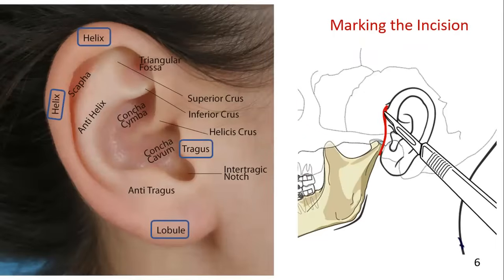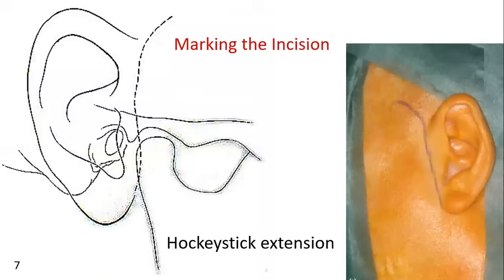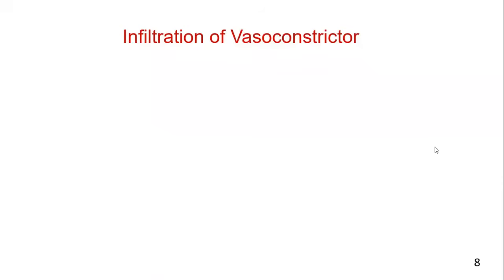The incision is outlined at the junction of the facial skin with the helix of the ear. A natural skin fold along the entire length of the junction can be marked. If none is present, posterior digital pressure on the pre-auricular skin usually creates a skin fold that can be marked. The incision extends superiorly to the top of the helix and may include an anterior or hockey stick extension.